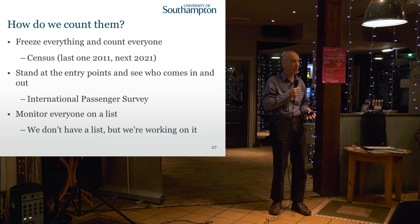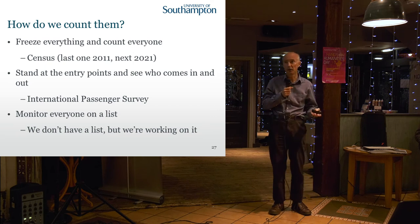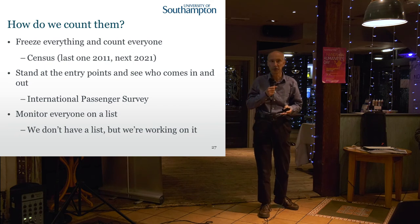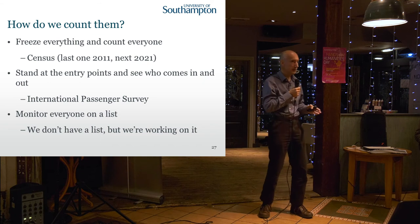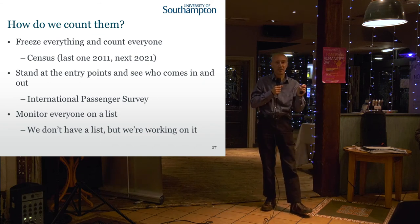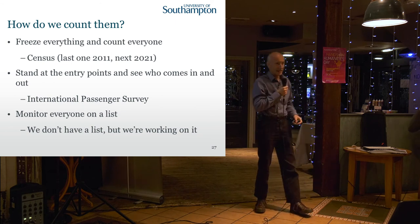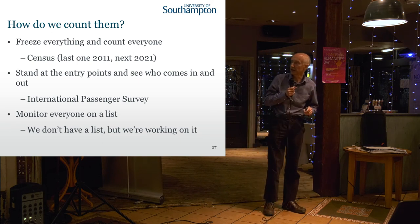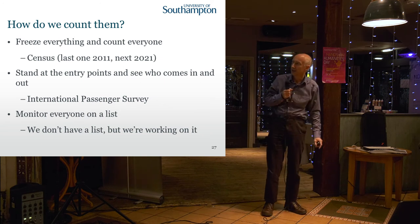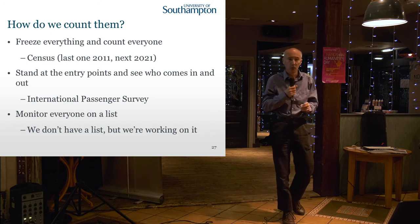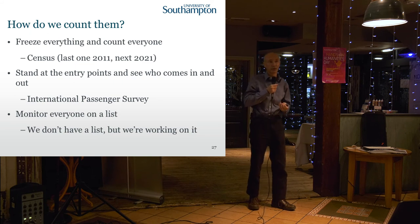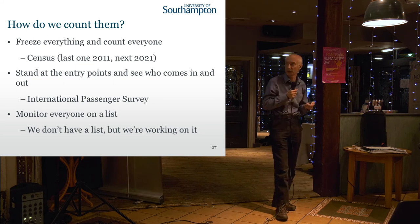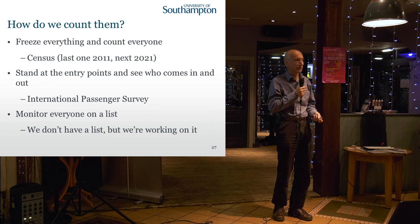We can freeze everything and count everyone — we try to do that with a census; the last one was 2011. What happened was we discovered our in-migration and out-migration data were quite wrong and had to correct the methodology. But that was a long time ago — a lot has happened since 2011. We've changed the rules, had a big political debate, had a referendum. We're not doing another census until 2021, and what we learn then may only be valid for a year or two. We could stand at entry and exit points — we have an International Passenger Survey, which is currently the main source of those statistics, but it only covers a very small proportion of people coming in and out.